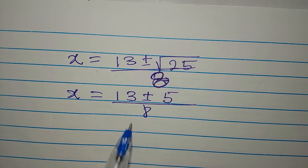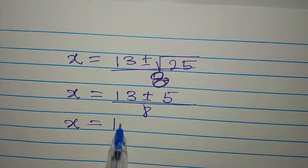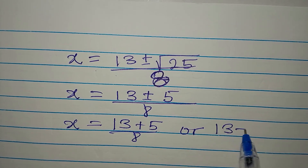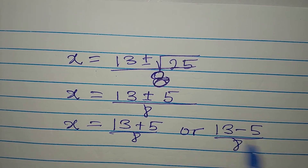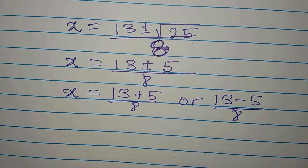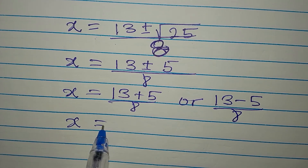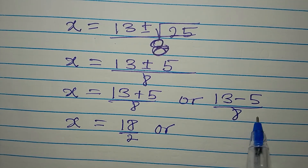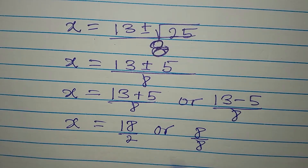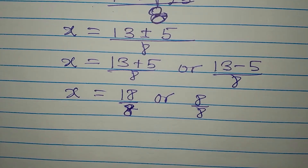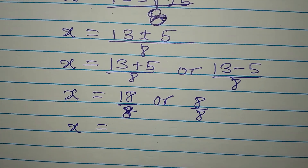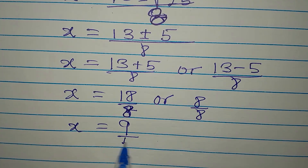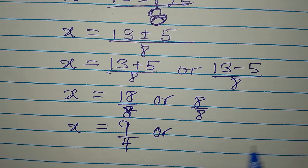This gives two solutions because of the plus or minus. So x will be 13 plus 5 over 8, or 13 minus 5 over 8. Continuing: 13 plus 5 is 18 over 8, which reduces to 9 over 4. Or 13 minus 5 is 8 over 8, which gives 1. So our solutions are x equals 9 over 4, or x equals 1.